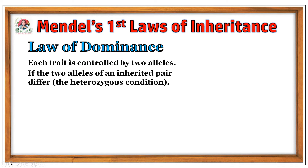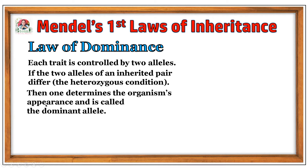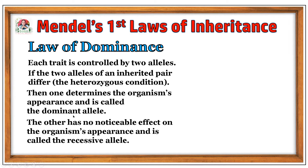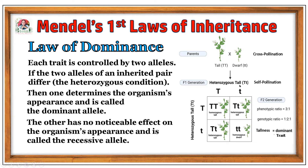Each trait is controlled by two alleles. If the alleles of an inherited pair differ — meaning they are in heterozygous condition — the one that determines the organism's appearance is called the dominant allele, whereas the other has no noticeable effect on the organism's appearance and is called the recessive allele. This can be understood with the illustration of Mendel's pea plant, where one contrasting trait was height. The plant can be tall or dwarf. When purebred parents were crossed, the F1 progeny obtained was heterozygous tall (capital T, small t), and its appearance was tall. Tallness is the dominant trait, controlled by capital T. This was experimentally proved by Mendel using a monohybrid cross. This law is also known as the law of expression of character.